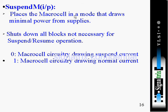Now coming to suspend: this places the macro cell in a mode that draws minimal power from the supplies. When the bus is idle, we can suspend. The serial interface engine will enable this pin and all blocks not necessary for suspend and resume operation will be shut down. When the value is zero, the macro cell circuitry draws suspend current; when one, it draws normal current.